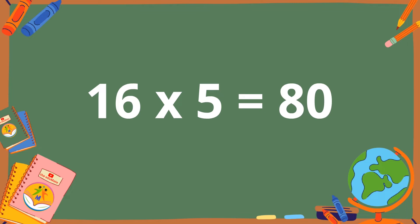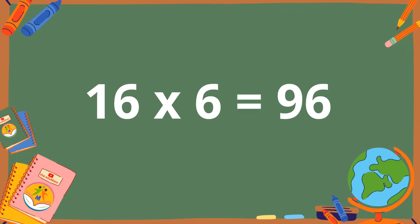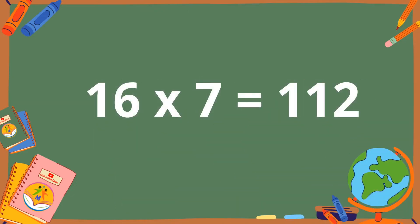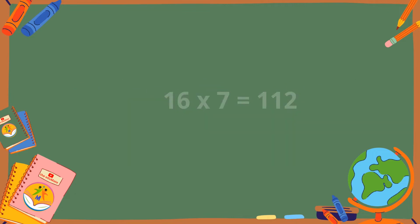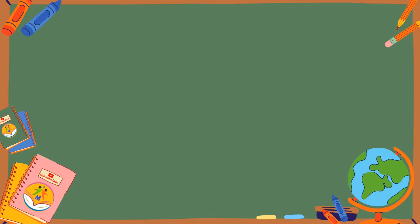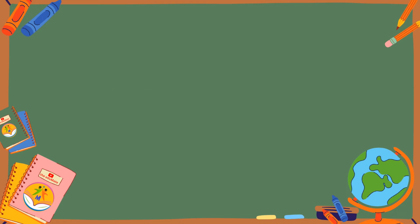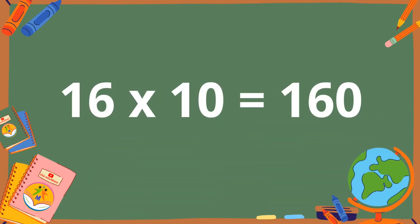16 fives are 80. 16 sixes are 96. 16 sevens are 112. 16 eights are 128. 16 nines are 144. 16 tens are 160.